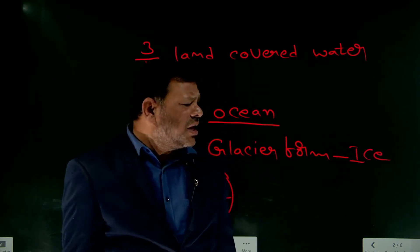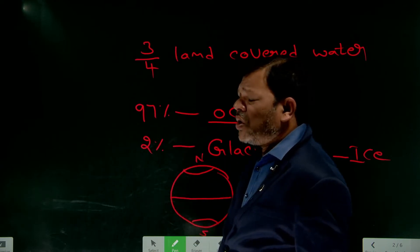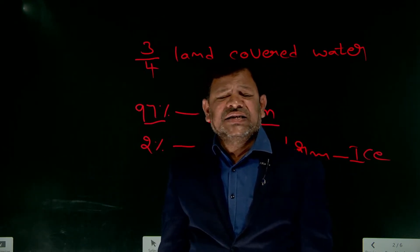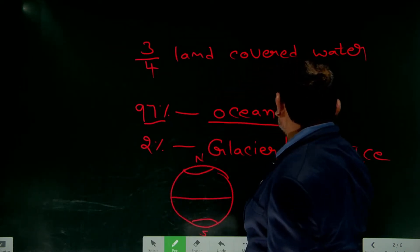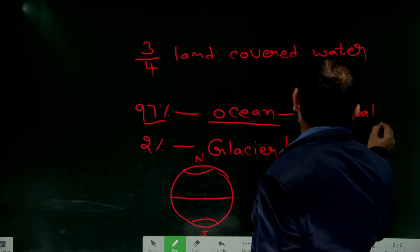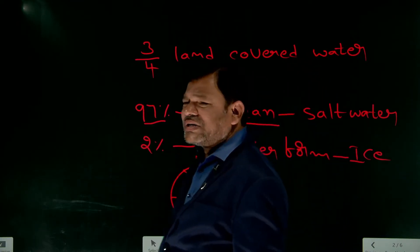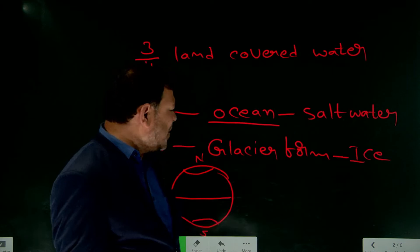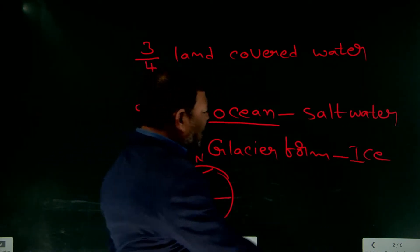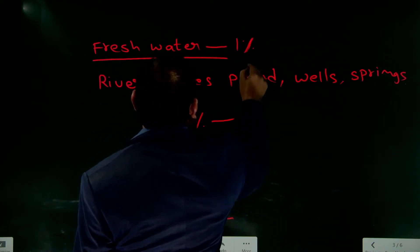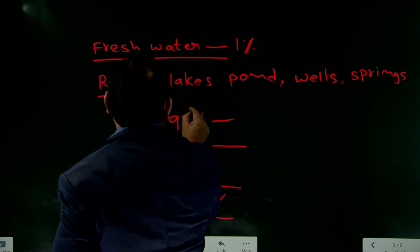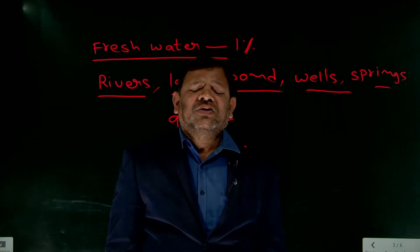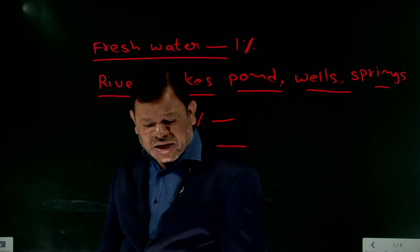Three-fourths of the land is covered with water. 97% of that water is in the oceans — this is salt water and not useful to us. 2% is present in glacier form, in the Arctic and Antarctic regions, also not useful. Only 1% is fresh water, present in rivers, lakes, wells, and springs. That is why we must conserve water.